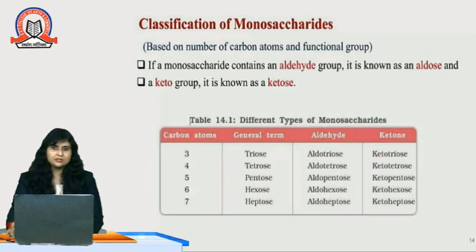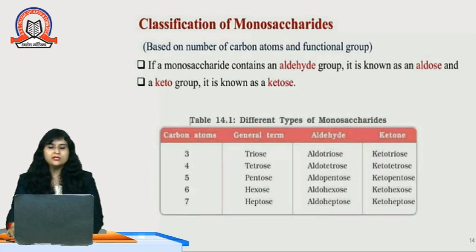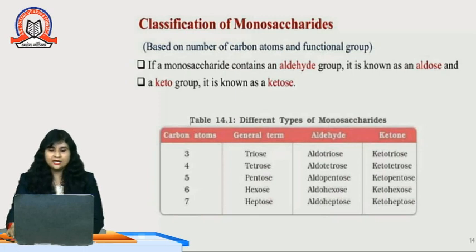On the basis of carbon atoms: if 3 carbons are there it will be triose, 4 carbon tetrose, 5 carbon pentose, 6 carbon hexose, and 7 carbon heptose. In the same way, if a ketone group is present, then for 3 carbon atoms we call it ketotriose, for 4 carbon ketotetrose, for 5 carbon ketopentose, for 6 carbon ketohexose, and for 7 carbon ketoheptose.